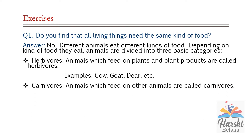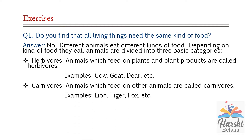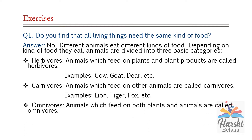Second type: carnivores — animals which feed on other animals are called carnivores. Examples: lion, tiger, fox, etc. Third: omnivores — animals which feed on both plants and animals are called omnivores. Examples of omnivores are crow, cat, dog, etc.